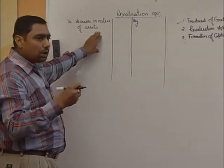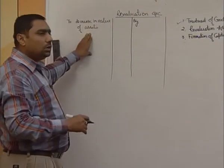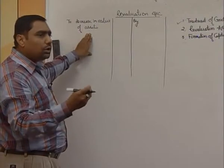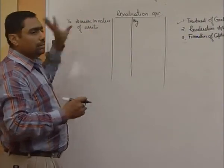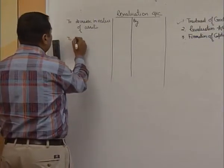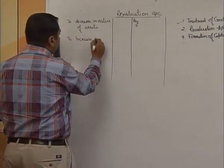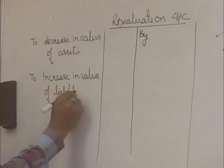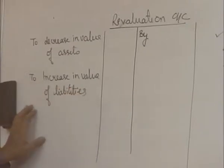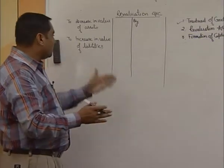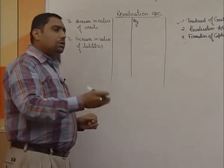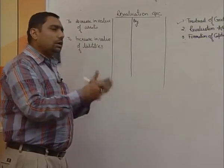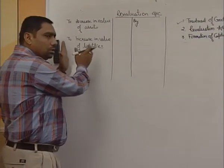If some depreciation is charged on machines and equipment, write it on the debit side. If provisions are made on debtors for bad and doubtful debts, write it on the debit side. The second item for the debit side is increase in value of liabilities. If the value of a liability increases — for example, creditors not previously traced appear, or the bank charges some interest or penalty — it is a loss for the business and will be shown on the debit side.